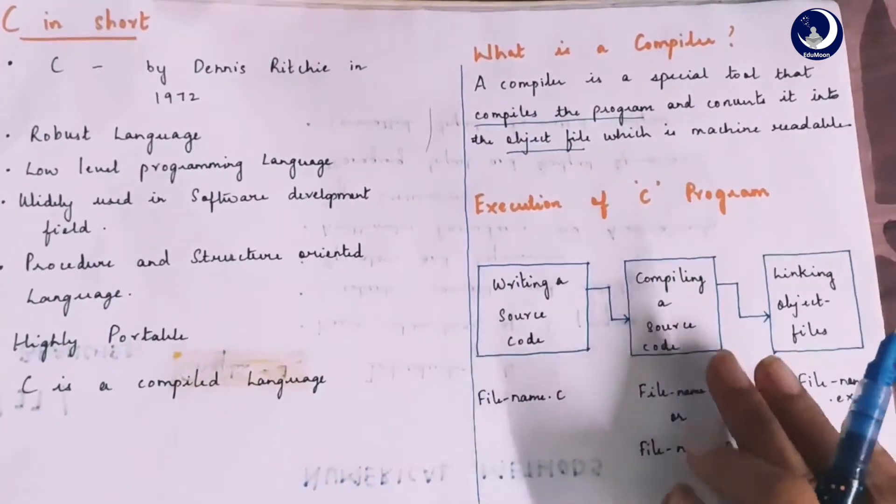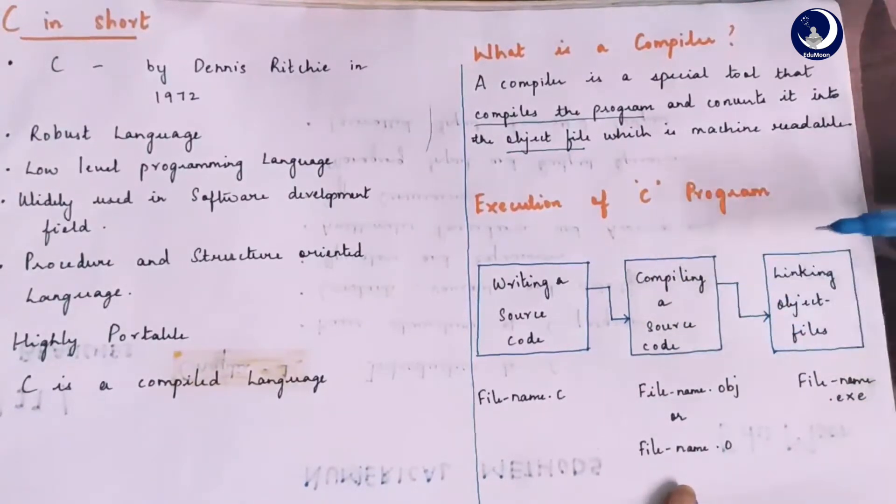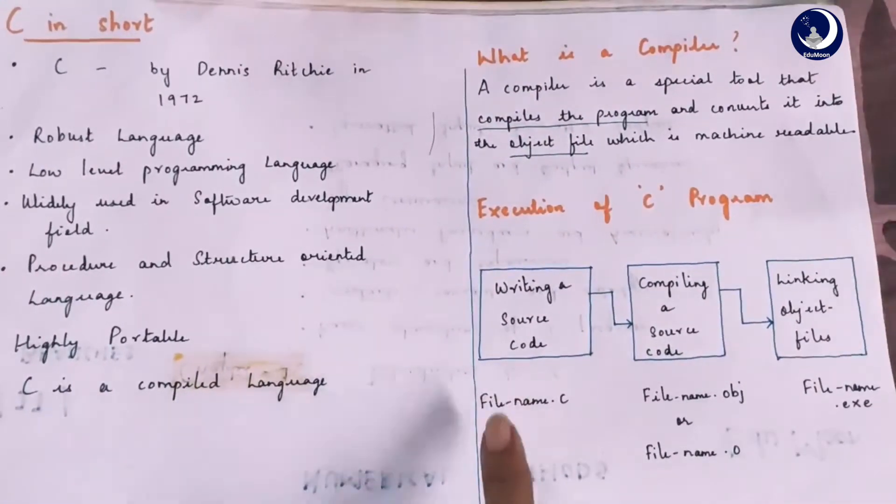After the compilation process, the linker will combine the different object files and creates a single executable file to run the program. This sequential diagram shows the three processes.